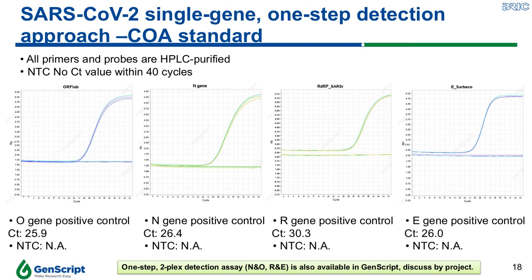Based on these sequences, GenScript has developed its own detection assay kits — a one-step single gene detection assay or a one-step two-plex detection assay combining the N and ORF and E gene targets. GenScript conducted quality assurance to guarantee all materials meet the highest qualifications, such as all primers and probes being HPLC-certified. No CT value was detected in the non-template control to ensure no cross-contamination, and positive gene control shows a CT value ranging from 25 to 30, indicating good quality and high sensitivity.